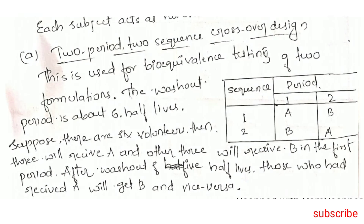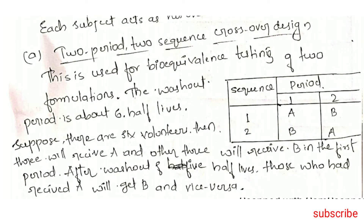2-Period 2-Sequence Crossover Design: This is used for bioequivalence testing of two formulations. The washout period is about 6 half-lives. Suppose there are 6 volunteers — 3 will receive formulation A and the other 3 will receive B in the first period. After the washout of 6 half-lives, those who received A will receive B and vice versa.